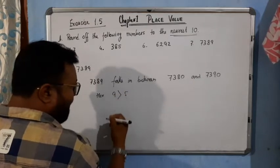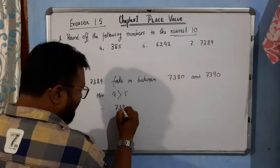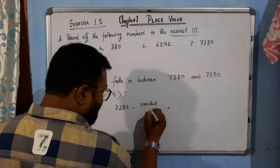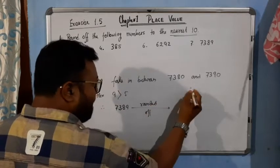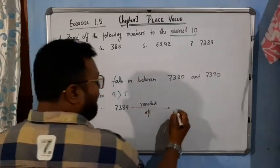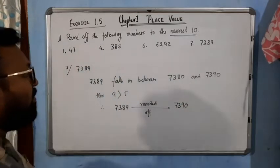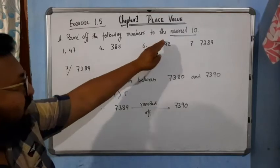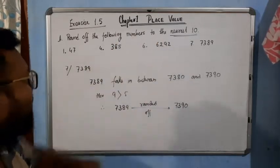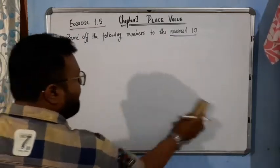9 is greater than 5. Therefore, 7389 is rounded off to the higher ten — that is 7390. So I hope you understood how to round off a number to the nearest ten. Now come to the next question.